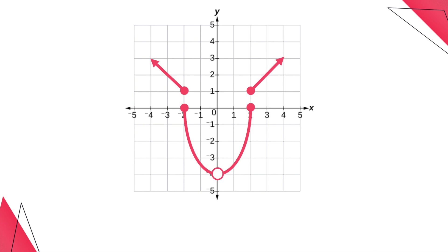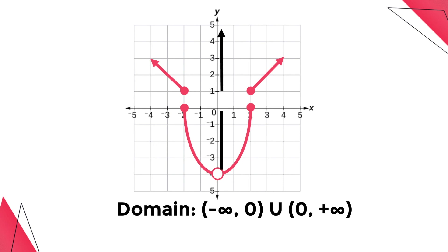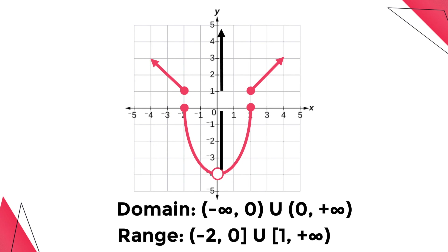For the last example, the domain is from negative infinity and stops at 0, not including 0, and then continues to positive infinity. This is represented by this interval notation. However, the range starts from negative 4, not including negative 4, then continues upward until 0, including 0, then jumps to 1, including 1, and goes up infinitely, which is represented by this interval notation.